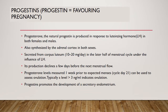Progesterone is sometimes called the hormone of pregnancy — 'pro' meaning for and 'gesterone' meaning gestation. It is a natural hormone produced in response to LH in both females and males and is also synthesized by the adrenal cortex. It is secreted from the corpus luteum in the latter half of the menstrual cycle under the influence of LH, and its production declines a few days before the next menstrual flow. Progesterone levels measured one week prior to expected menses can be used to assess ovulation; a level above 3 ng/ml typically indicates ovulation.